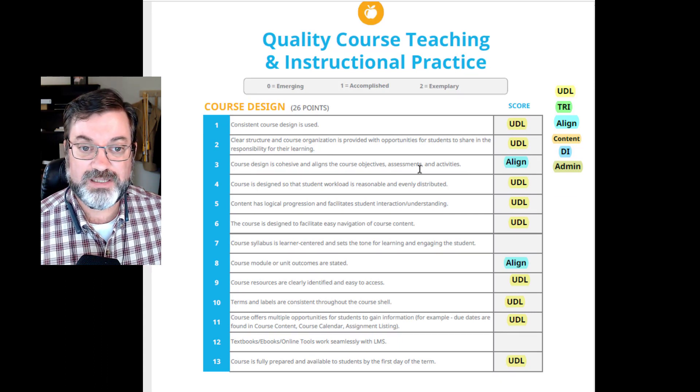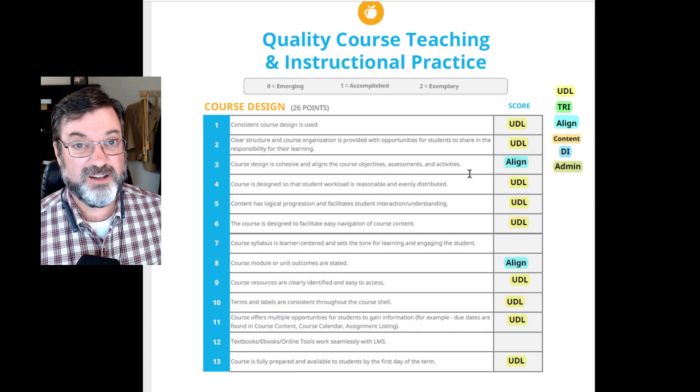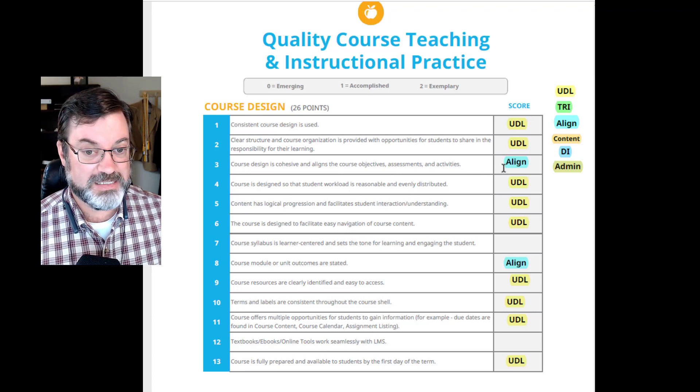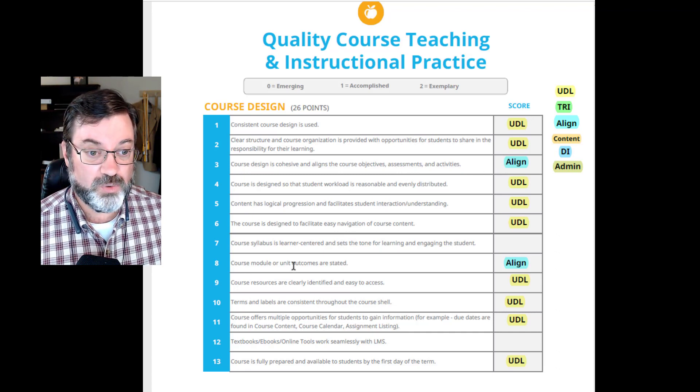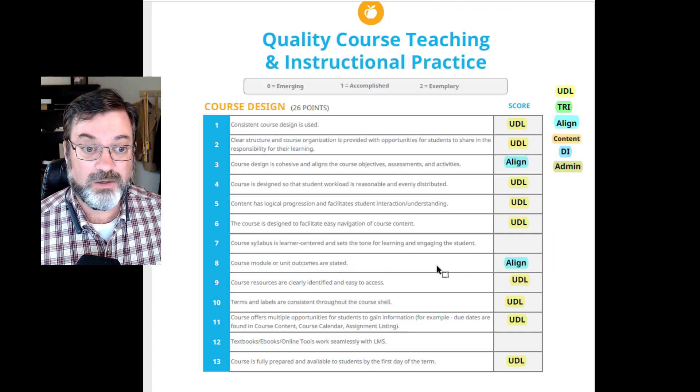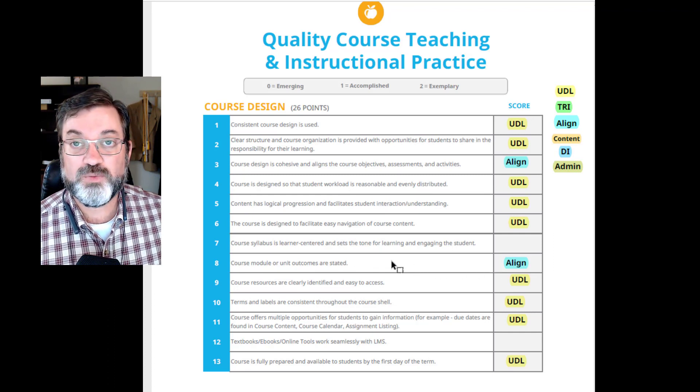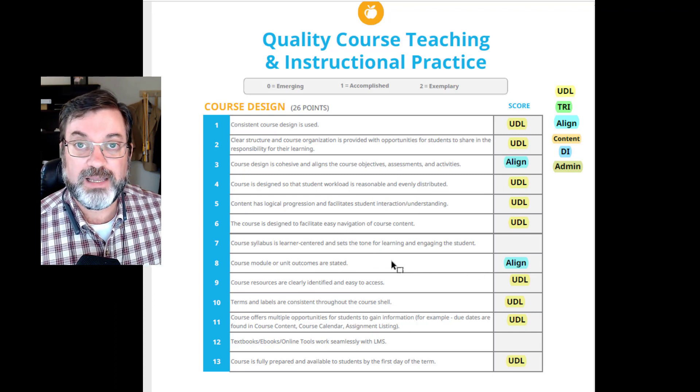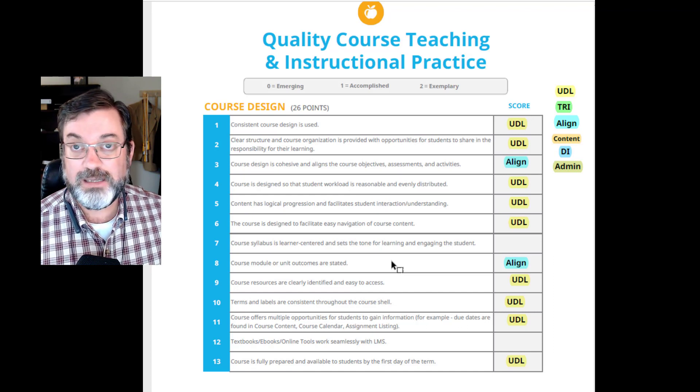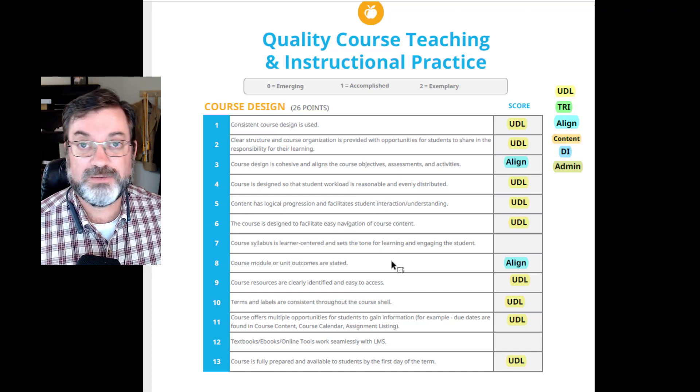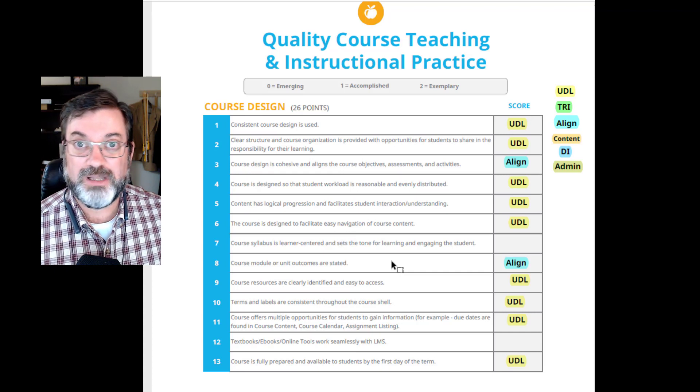So here we are. Course design is cohesive and aligns the course objectives, assessment, and activities. That's the primary function of alignment. Course module or unit outcomes are stated, so we want in each module or unit that the outcomes are stated clearly and aligned to your course objectives. The assignments in that module align to the module objectives which align to the course objectives.